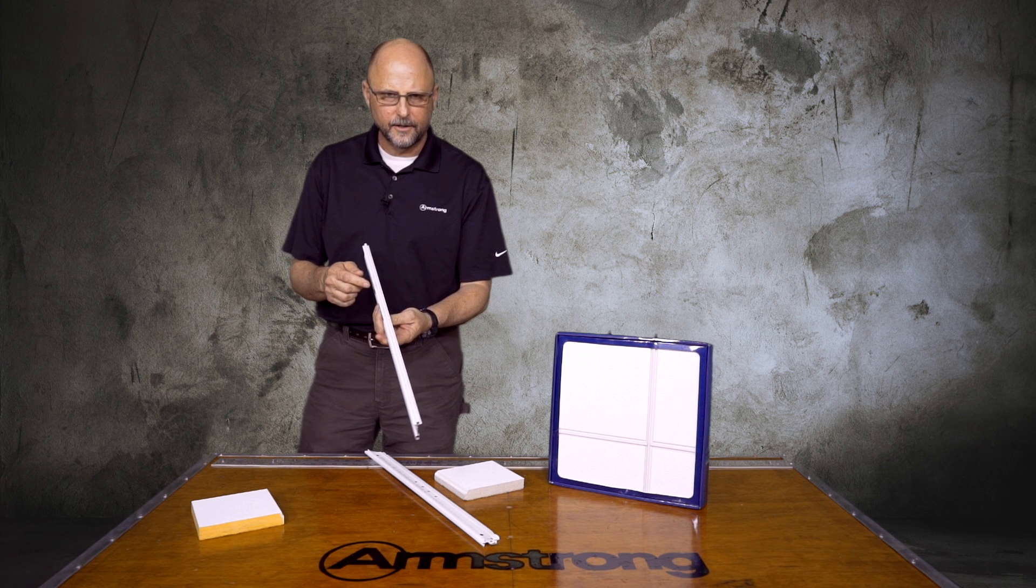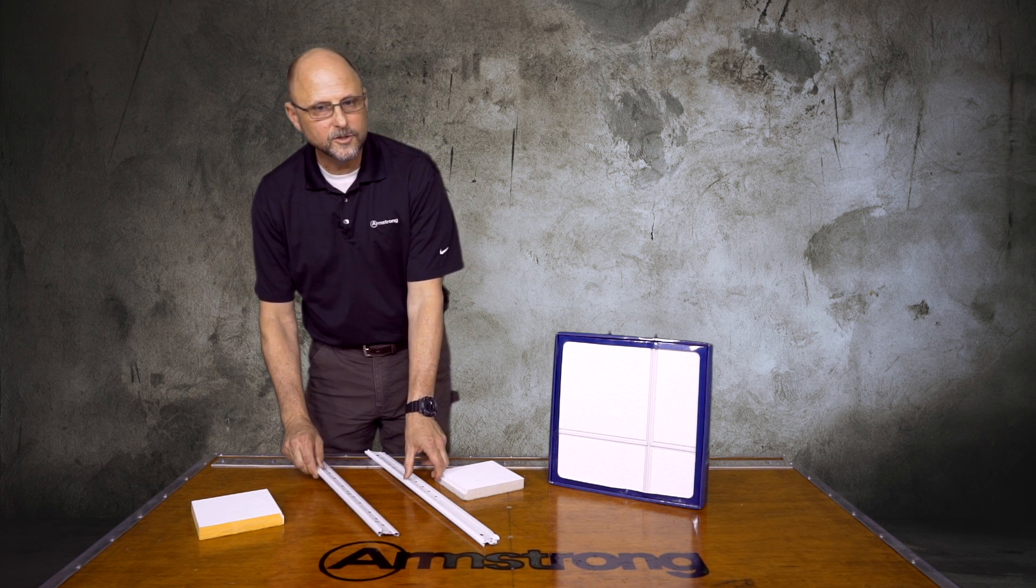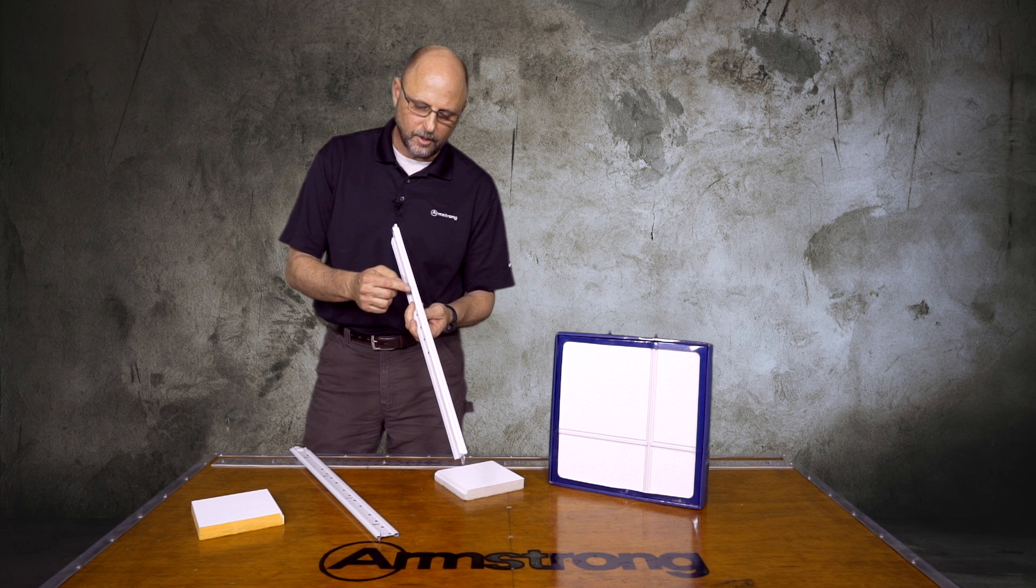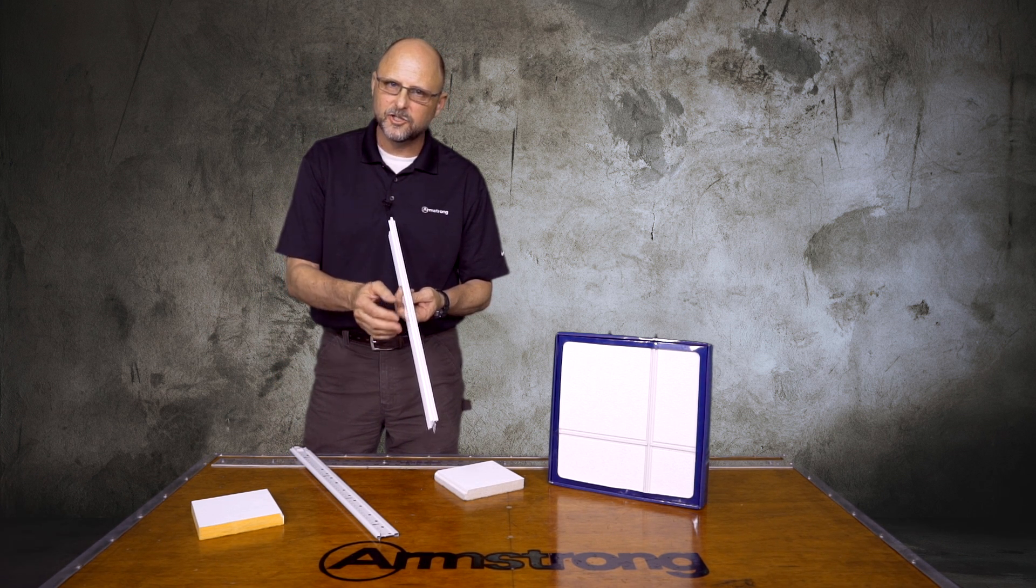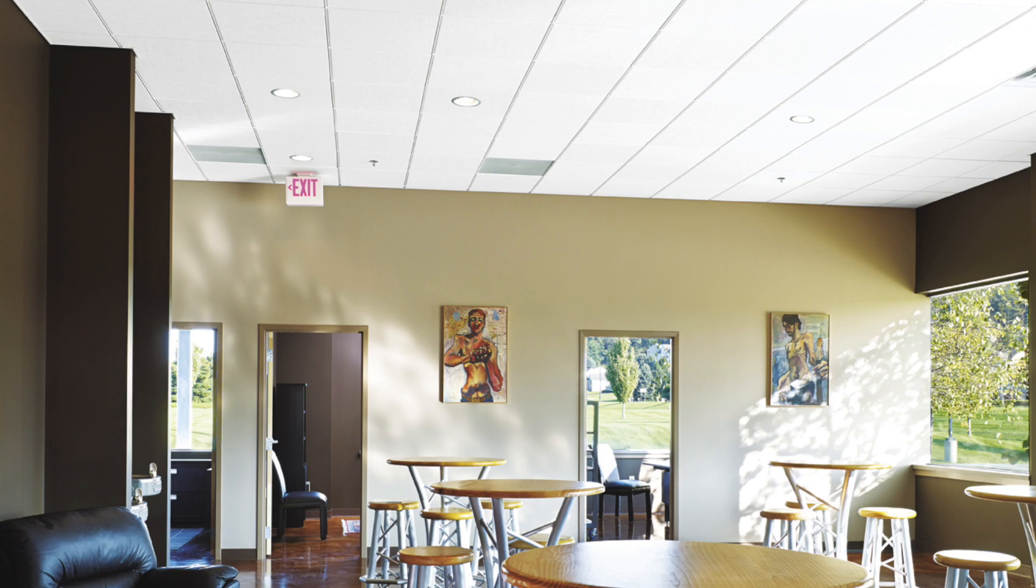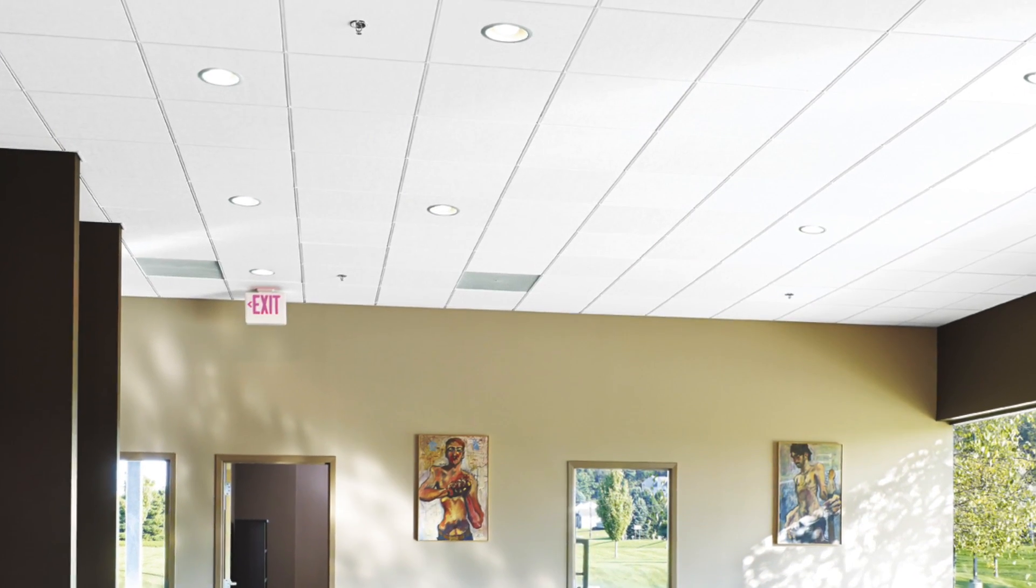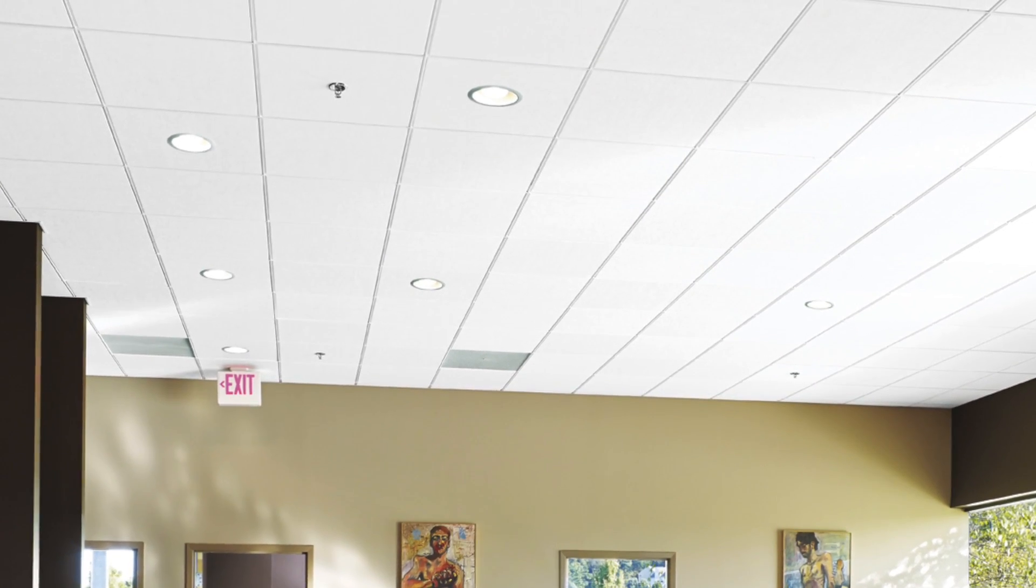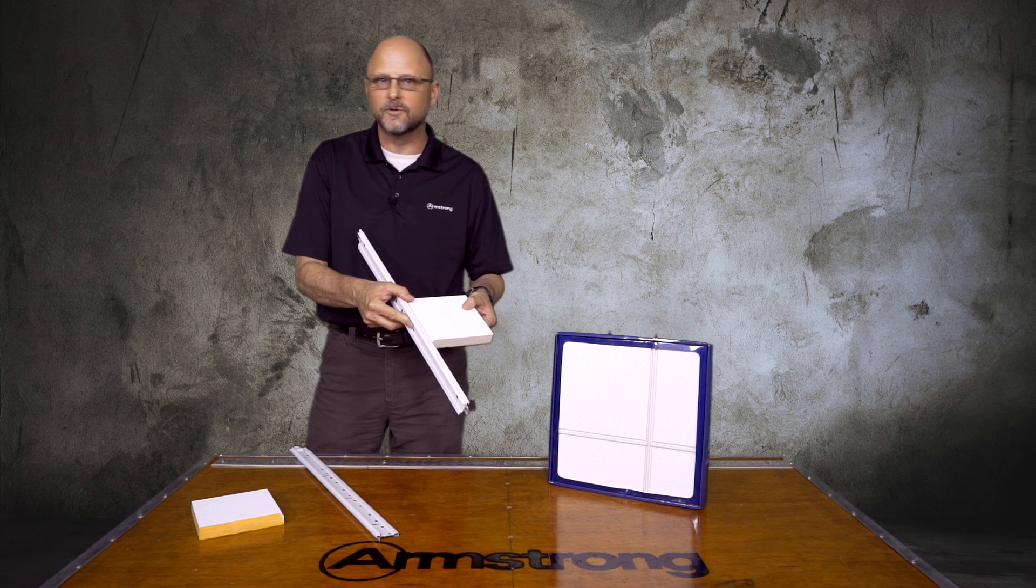As far as finishes, Interlude comes standard in a global white finish, but we also have the new Armstrong Blizzard White. It's a textured powder coated finish that mimics perfectly our textured ceilings like Kala, Lyra, Altima, and Optima ceilings. That's a low gloss textured finish which really blends in nicely with the ceiling panels.